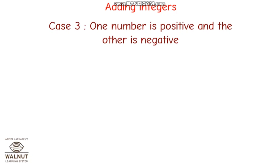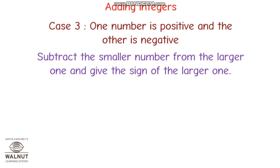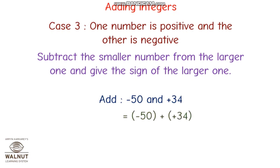Third case: one number is positive and the other is negative. What do we do? Subtract the smaller number from the larger one and give the sign of the larger number to the answer. For example, minus 50 and plus 34 — you write minus 50 plus 34, do the subtraction: 50 minus 34 is 16, and give a negative sign because the larger number is 50 and it has a negative sign. So the answer is minus 16.